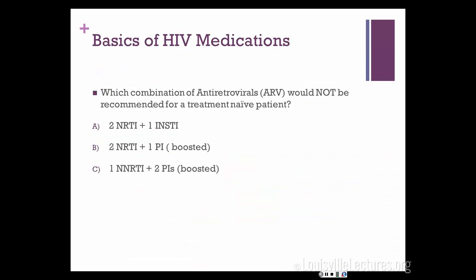Let's talk about how we combine the drugs. Which combination of ART would not be recommended for a treatment-naive patient? Treatment-naive means somebody who's never been on any HIV meds. The options are two NRTIs with one integrase, two NRTIs with one boosted PI, or one NRTI and two PIs. The answer is C — one NRTI and two PIs. Typically you don't use two PIs; they are very potent drugs but have a lot of side effects, and adding two PIs plus a booster is not going to be well-tolerated and causes a ton of drug interactions.